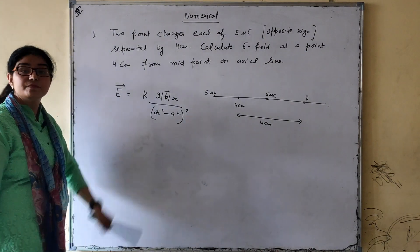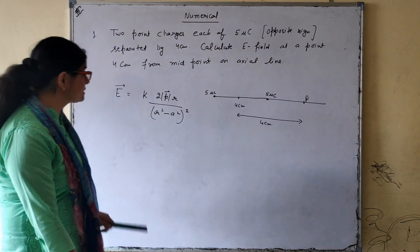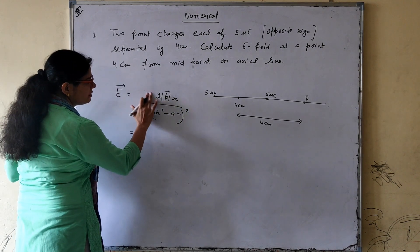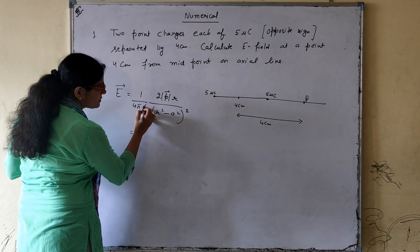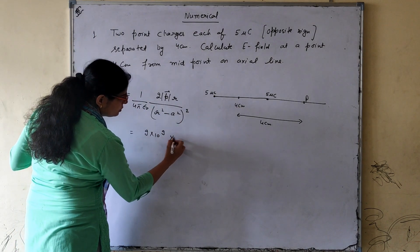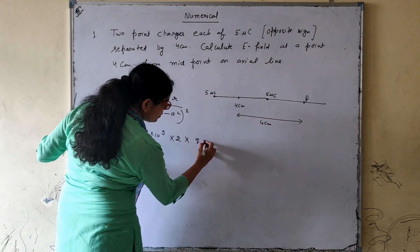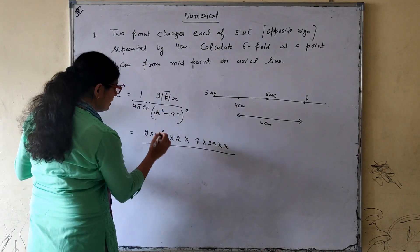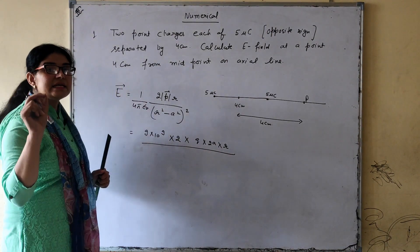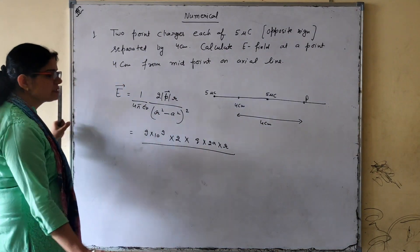Remember: it is r squared minus a squared, whole squared — not just ka square or ka cube. The value of k is 1/(4πε₀) = 9 × 10⁹. Now, p = q × 2a. Here r is the distance from the center, which is 4 centimetres = 0.04 m. And 2a is the separation between the two charges, which is 4 cm, so a = 2 cm = 0.02 m.